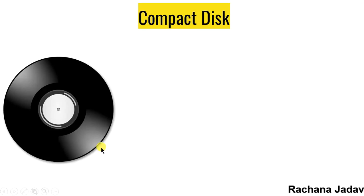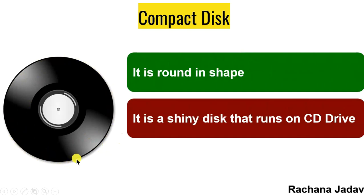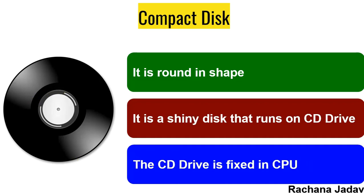Next is compact disc — this is the last one. It is a round shape — aapko dikhra hai woh as a circle dikhta hai. It is a shiny disc that runs on a CD drive. Isko CD ko lagane ke liye hamei chahiye CD drive. The CD drive is fixed in the CPU — aap dekhte honge ki aapke paas CD player agar hai, toh CD player jho hota hai, wiesa hi CD drive hota hai jo CPU mein fixed hota hai. And even in laptops — laptops mein bhi CD drive hota hai.